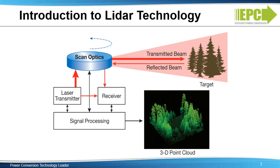A typical LIDAR system transmits light into the atmosphere or space and detects reflected light from one or more targets located some distance from the LIDAR unit. A conceptual LIDAR system is shown here. Comparison of the transmitted and reflected light makes it possible to determine target properties. The target could be solid, such as trees, liquid, such as raindrops, or even gaseous, like a layer of the Earth's atmosphere.